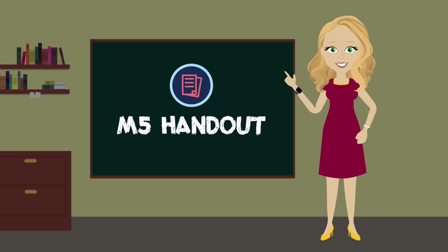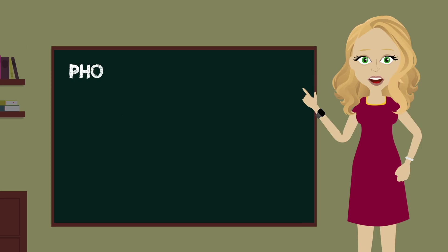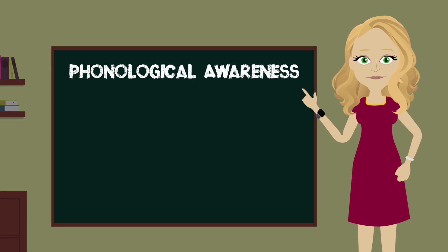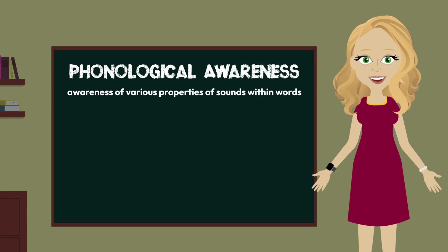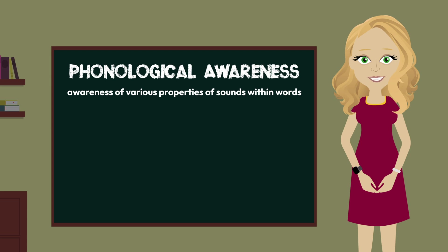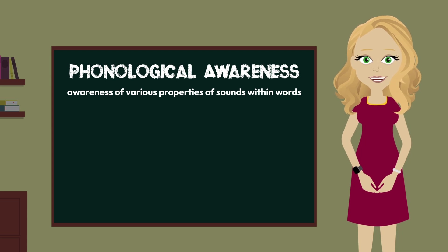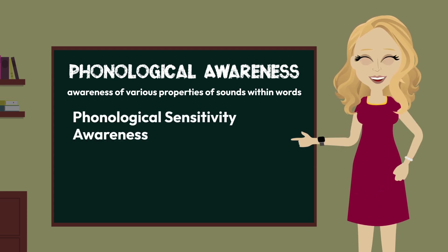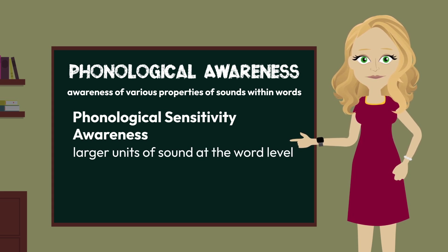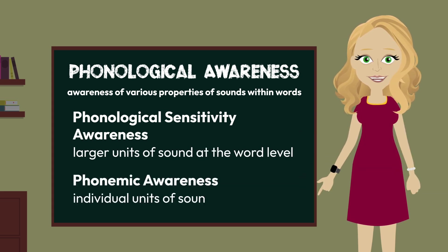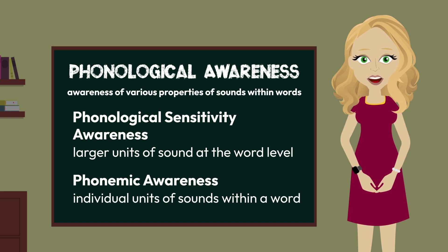Since our last stop and jot, content has centered around phonological awareness and the two subsets that comprise that overarching term, which refers to an individual's awareness of various properties of sounds within words. These two subsets are delineated by the sound units involved within their area of study. Phonological sensitivity awareness deals with larger units of sound at the word level, and phonemic awareness focuses on the individual units of sounds within a word.